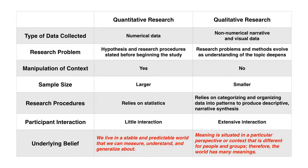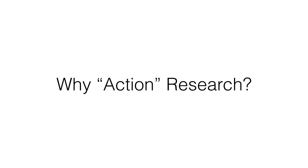In terms of an underlying belief system, quantitative research believes that we live in a stable and predictable world that we can measure, understand, and generalize about. Qualitative research holds that meaning is situated in a particular perspective or context that is different for people in different groups — therefore, the world has many meanings. Most research is some sort of blend between quantitative and qualitative, especially when dealing with something like action research.